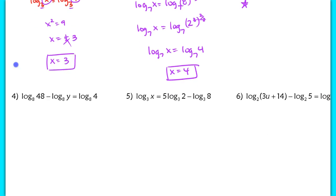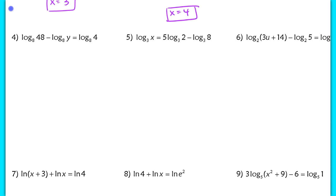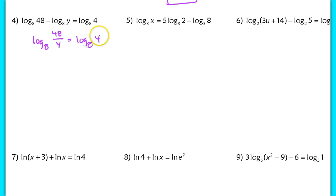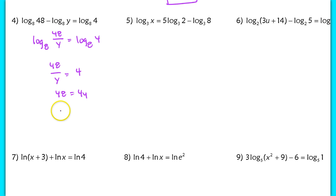I'm going to work on number 4. We have a subtraction here — a difference — so I'll use a quotient rule to combine the logs. That gives log base 8 of 48 over y equaling log base 8 of 4. Equating arguments: 48 over y equals 4. Multiply both sides by y to get 48 equals 4y, then divide by 4: y equals 12. Plugging 12 back in still gives a positive argument, so y equals 12 is the solution.